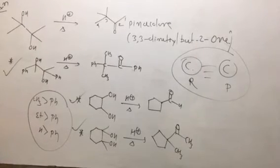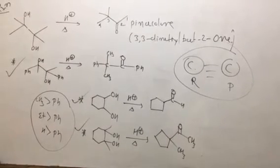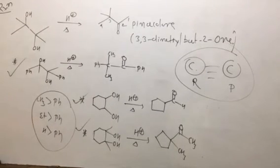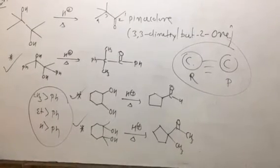This type of rearrangement takes place not only in acyclic compounds but also in cyclic compounds. For example, cyclohexane-1,2-diol is converted into cyclopentane carbaldehyde.